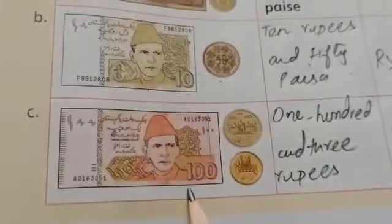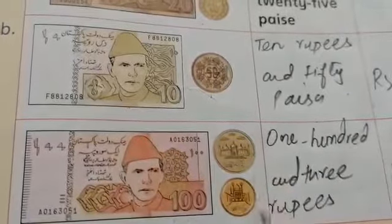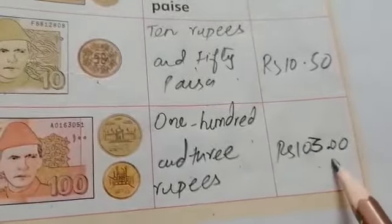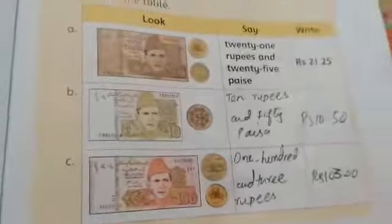100 plus 2, 102. And total Rupees 3. 103 Rupees. Rupees 103.0. Now turn the next page. Complete the rest of the table.